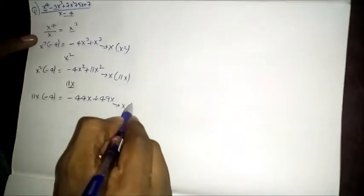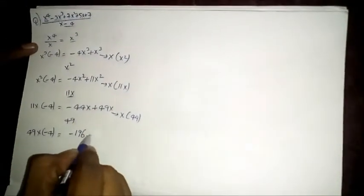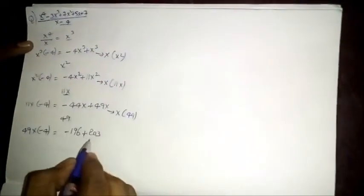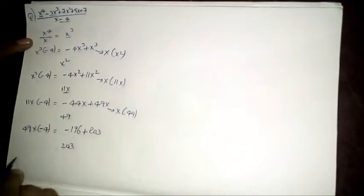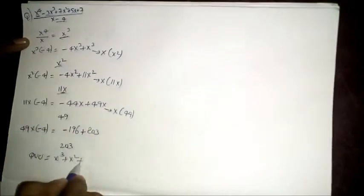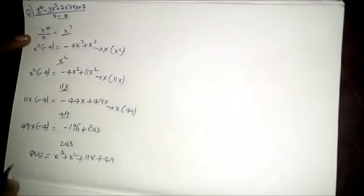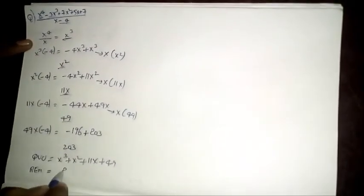49x is the multiplication of x into 49. This 49 is again multiplied with minus 4, giving minus 196, but in the numerator we have plus 7 — if we add plus 203 we get plus 7. Hence the quotient is x cubed plus x squared plus 11x plus 49, whereas the remainder is 203.